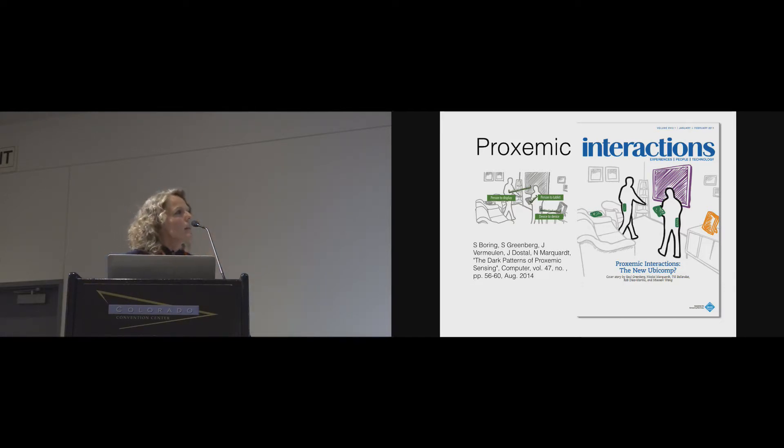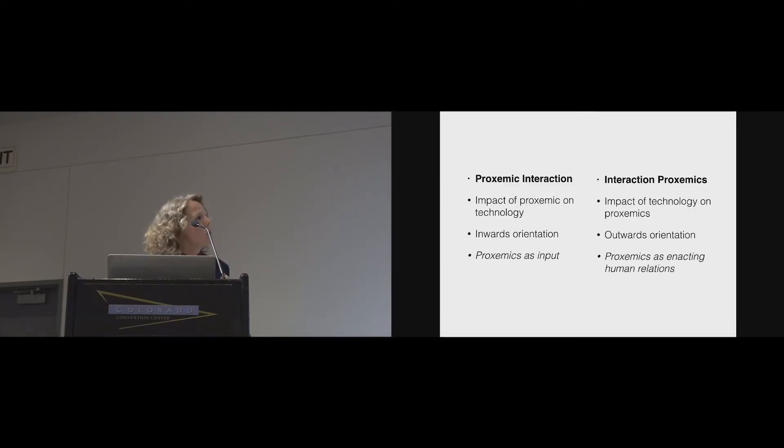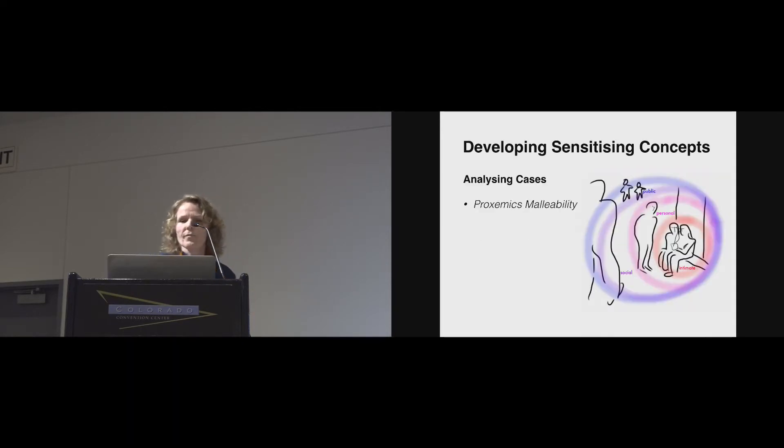So, just to contrast this, proxemic interactions is a complementary perspective which focuses more, and this is a bit of a caricature, but still focuses more on how we use distance as a means of interacting with technology. And there are some very thoughtful reflections also in this area around dark patterns and so on and so forth. But the point here is that we try to focus on, you know, proxemic interaction on the one hand, which is how we use proxemics as a means of interaction with technology. It focuses inwards on sort of the relationship between people and technology and looks on how proxemics can be an input. And we'd like to point to this more complementary perspective where we look at how the impact of technology is on proxemics. We've tried to focus outwards from the system of people and computers and how that can figure us more broadly. And it's a matter where we see proxemics as a matter of how we can enact human relations.